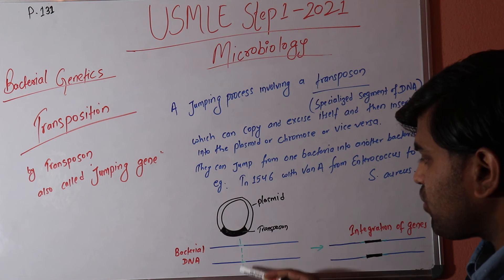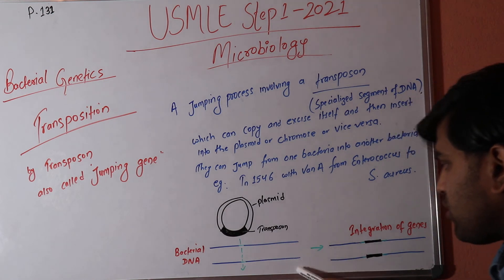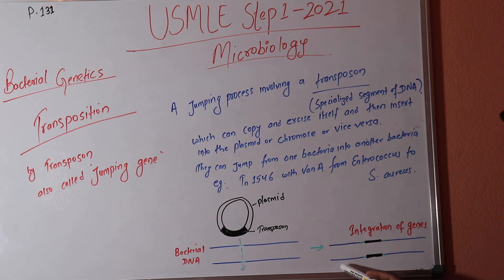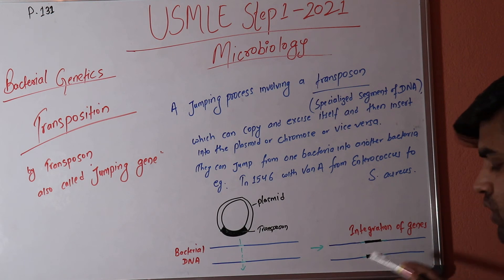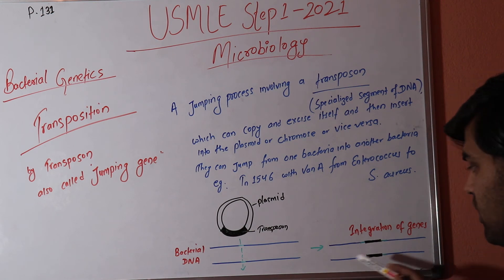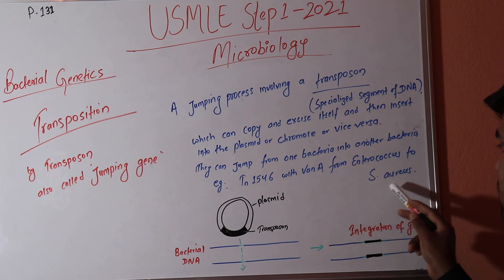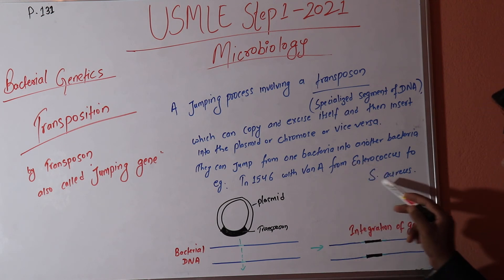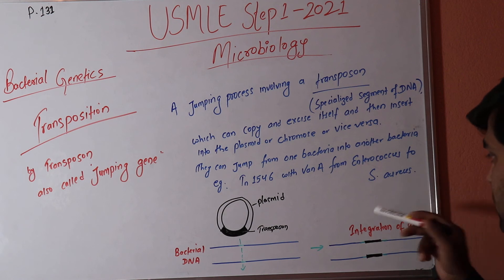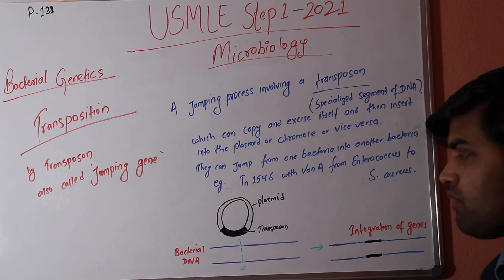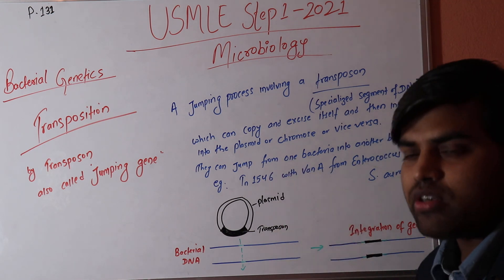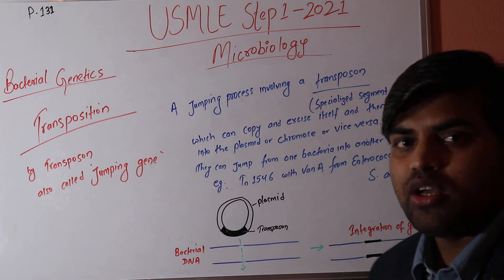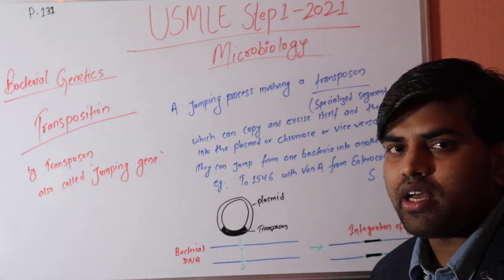You can see in the diagram: the transposon targets a site on the bacterial DNA, integration occurs at that target site, and the black portion representing the transposon becomes incorporated, creating new genetic information. Once TN1546 is transferred from Enterococcus to Staphylococcus aureus, the S. aureus now carries the vanA gene and becomes resistant to vancomycin. This is how transposons transfer drug resistance genes within or between bacteria.